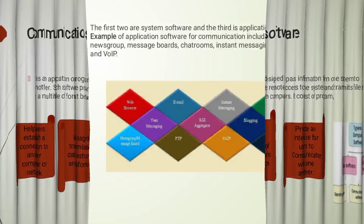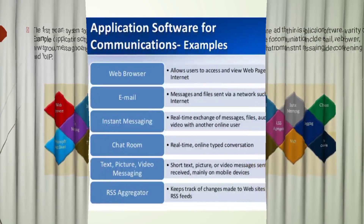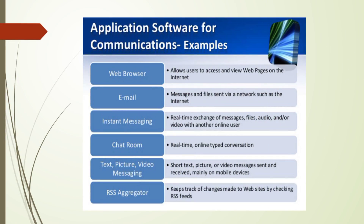There is a variety of examples of application software for communication, which may include email, web browser, news group, message board, chat room, video, instant messaging, etc. A web browser allows users to access and view web pages on the internet. Email is used to transmit messages and files via a network such as the internet. Instant messaging is used to transmit video and audio to online users.